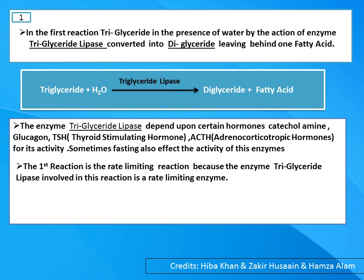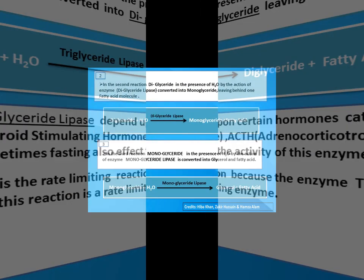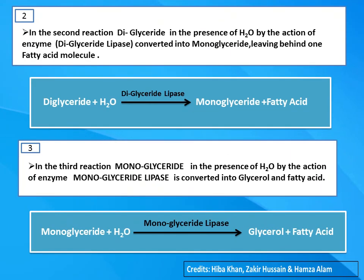The hormone-sensitive lipase depends upon catecholamines, glucagon, and other hormones such as TSH, as well as fasting. In the second step, diglyceride is acted upon by diglyceride lipase in the presence of water, liberating one more fatty acid and leaving behind monoglyceride. In the third step, monoglyceride lipase acts on monoglyceride in the presence of water to liberate glycerol and a fatty acid. Step one is rate limiting.